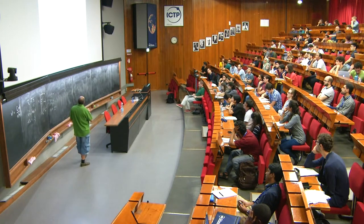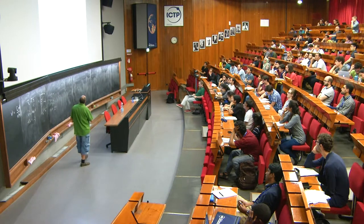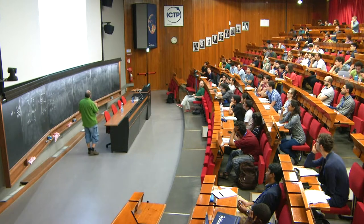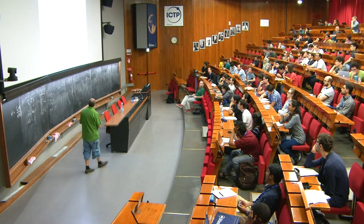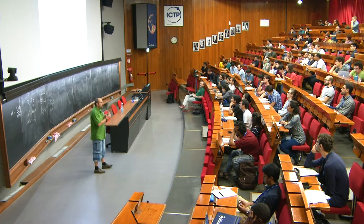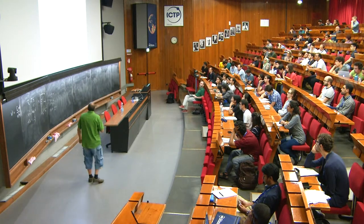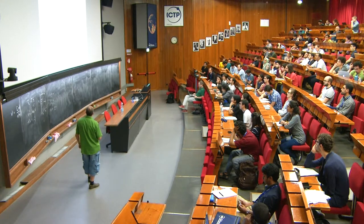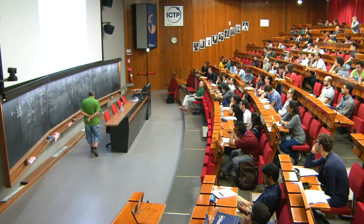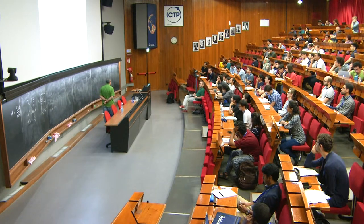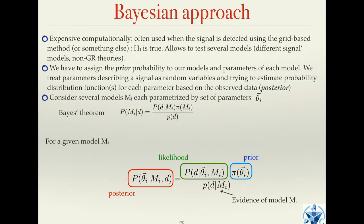For model selection, you estimate the probability of model I given the data. A model is parameterized by some set of parameters. For a given model, we apply Bayes' theorem: we have a prior on the parameters, which is quite important. If you don't know what it is, use a non-informative prior — for instance, uniform on the sky if you don't know where your source is. For neutron stars, you know masses should be between one and roughly three solar masses, so use that information.